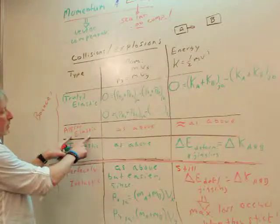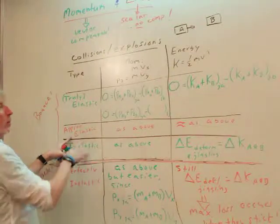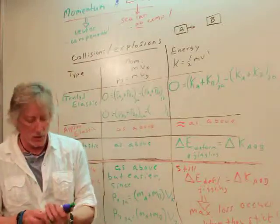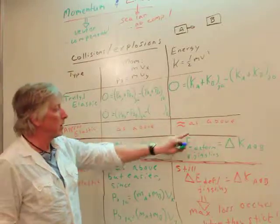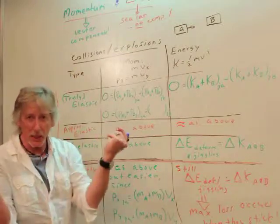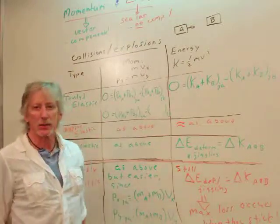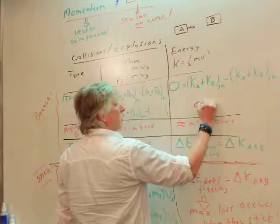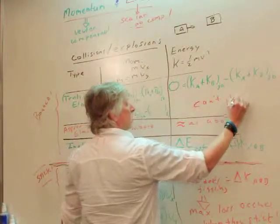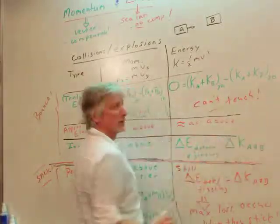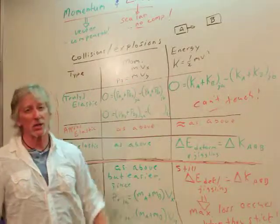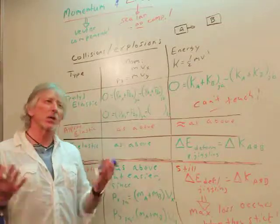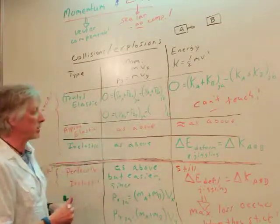When it's approximately elastic, we can get away with it. So oftentimes they'll have pool balls, billiard balls hitting, and they'll say it's an elastic collision. It isn't. I'll show you that. To be truly elastic, they can't touch. If they do touch and it's called an elastic collision, it's really approximate. And which means your results will be good enough.